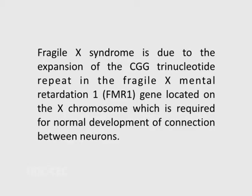Fragile X syndrome is due to the expansion of the CGG trinucleotide repeat in the Fragile X mental retardation 1 or FMR1 gene located on the X chromosome, which is required for normal development of connections between neurons.